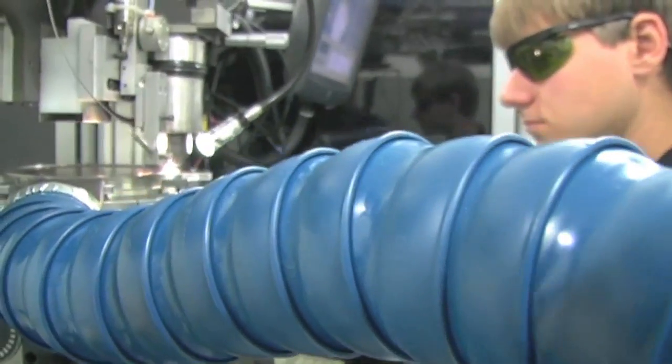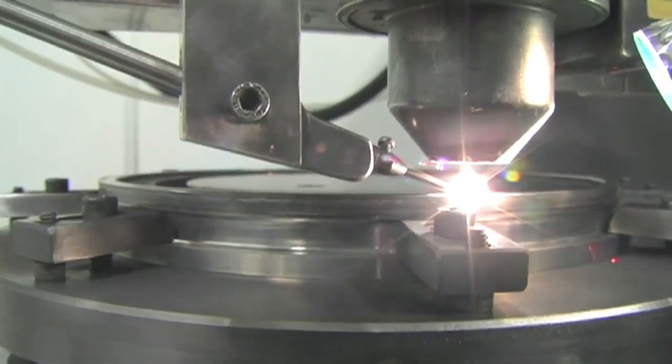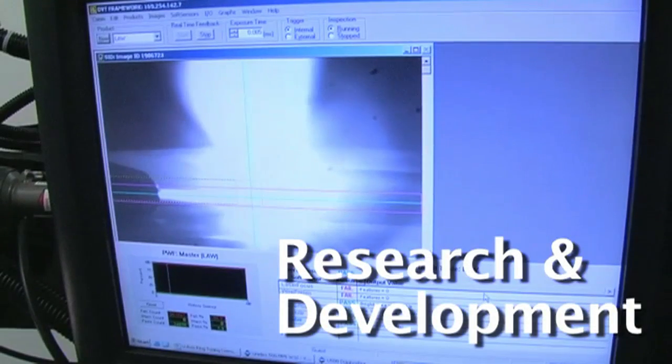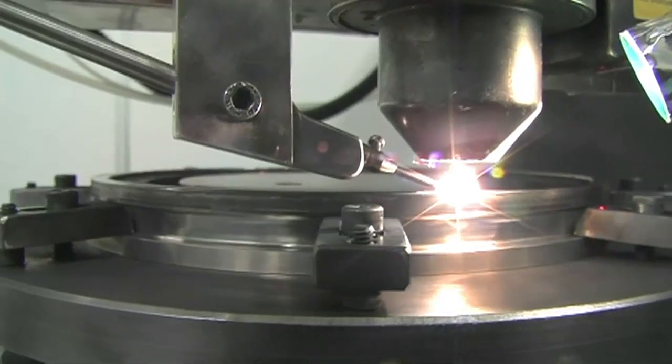Additionally, we offer our customers the LAW or laser applied wire process for metal surface restoration of critical aero engine components using wire as the clad material.